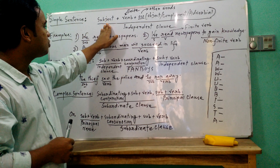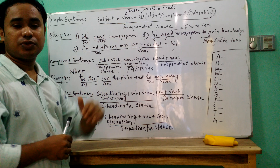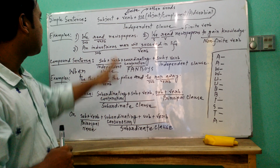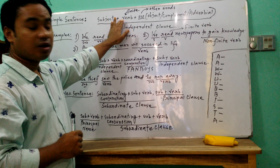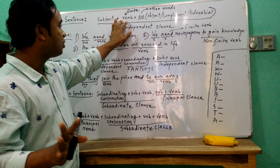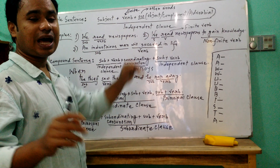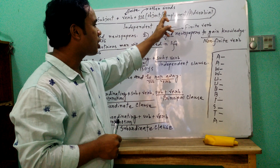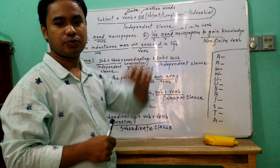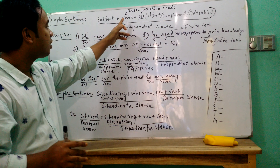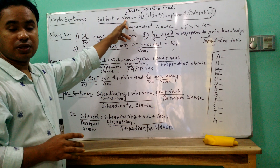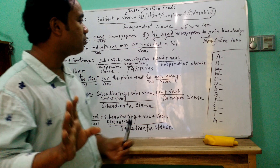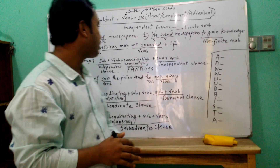So, a subject-verb combination forms a simple sentence, where verb means finite verb. Other words may include an object, verb complement, or adverbial. Besides the finite verb, there might be some other words, but those would be non-finite verbs.